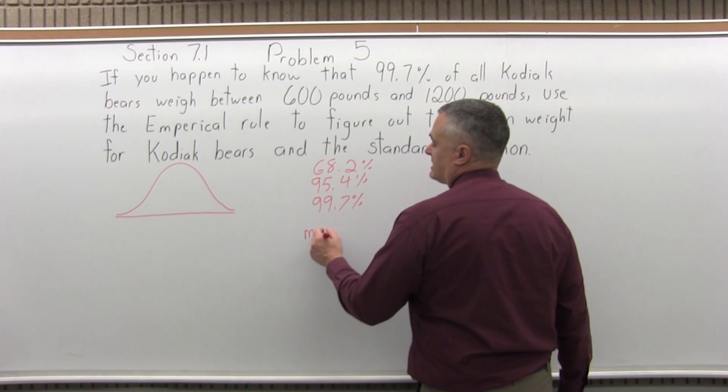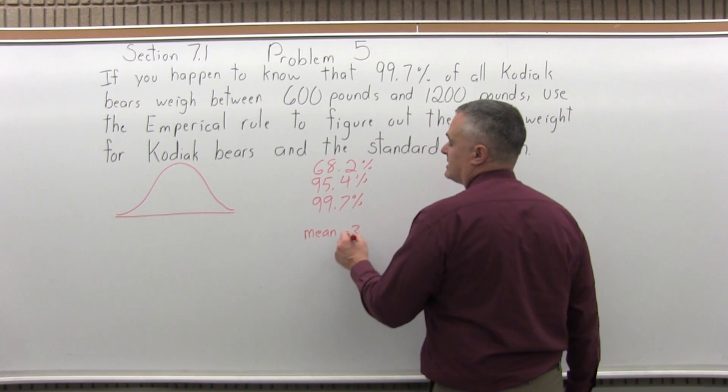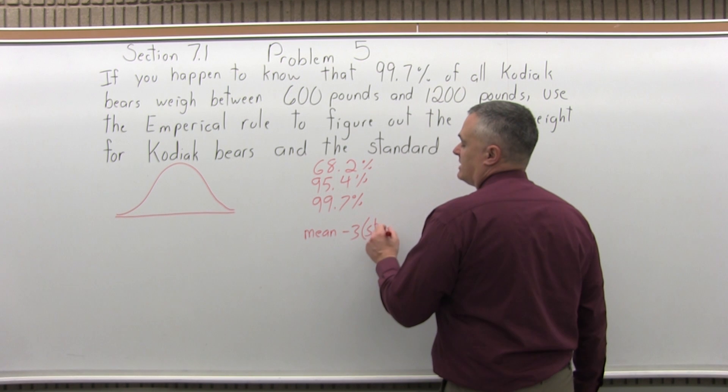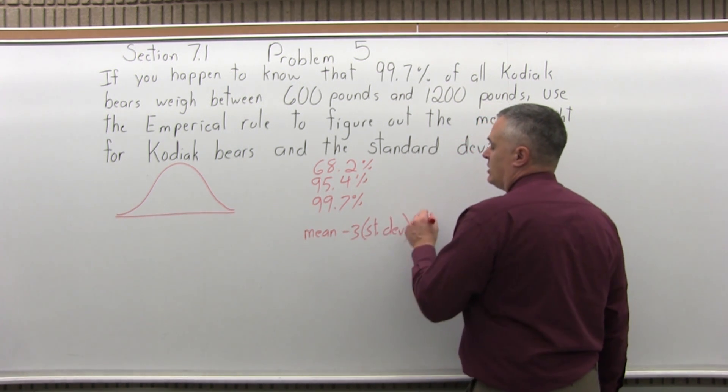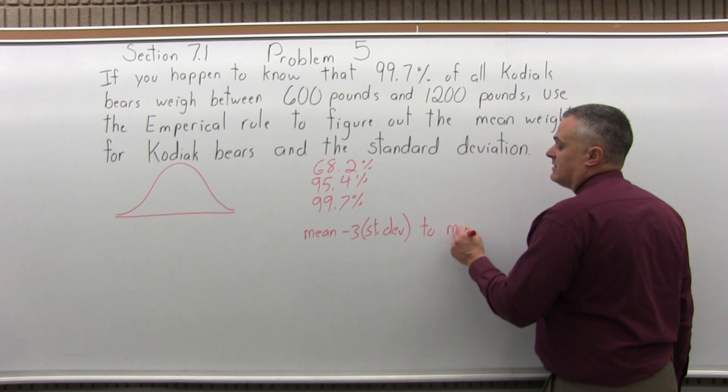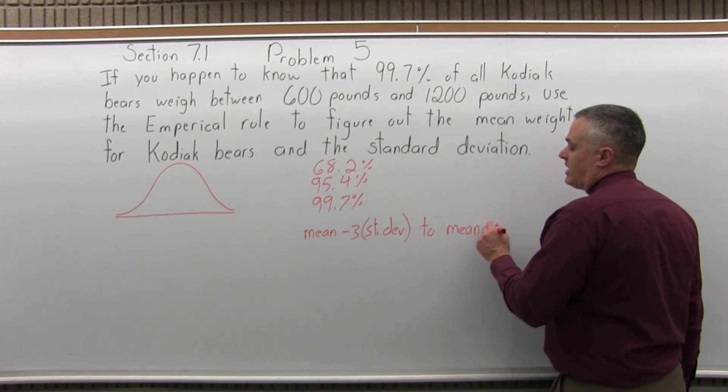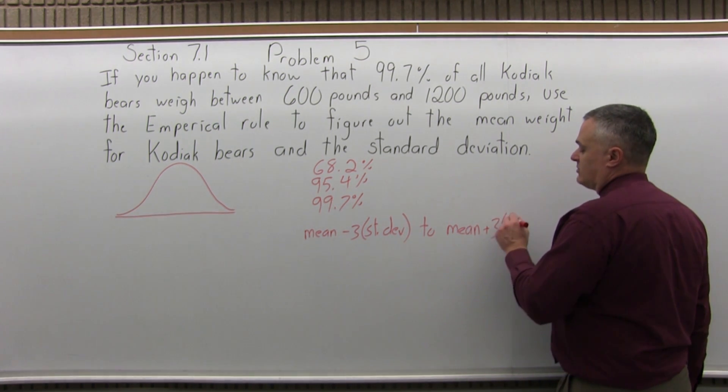So the small end of the interval is the mean minus three times the standard deviation, and the bigger end of the interval is the mean plus three times the standard deviation.